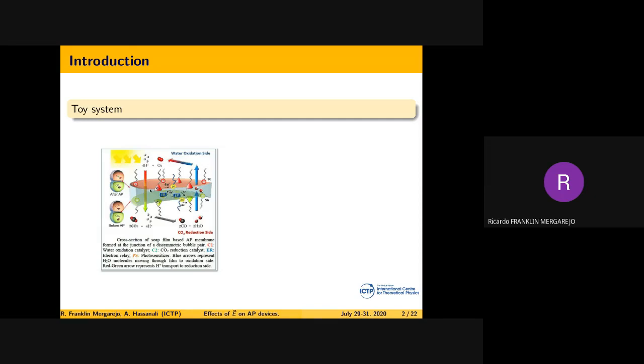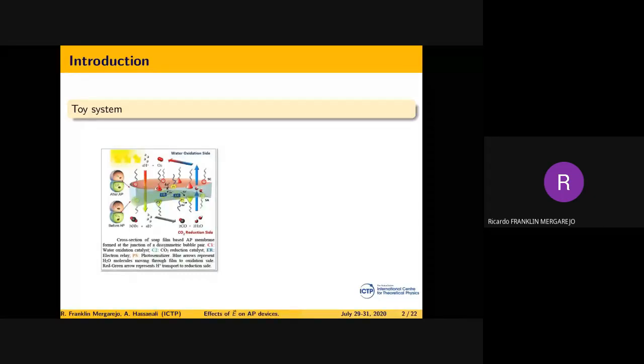You have a water interface in the middle of the two bubbles, with the photosynthesizer on the surface. It harvests light, transforms charge carriers, and then you collect it somewhere. This is the aim of the project.